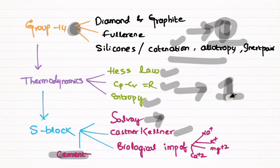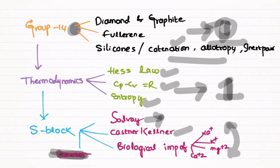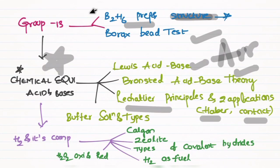Second important chapter is thermodynamics. Third is s-block, which is a very easy chapter with 4 questions — covering the process of Na2CO3, NaOH, and the biological importance of sodium, potassium, magnesium, and calcium. These are 4-mark questions.